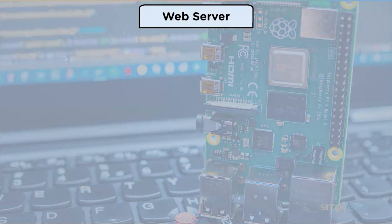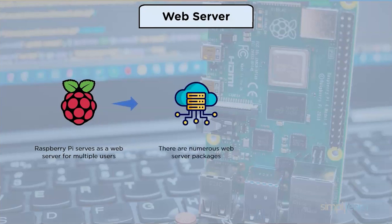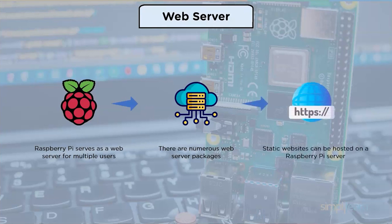The first project is web server. The Raspberry Pi serves as a web server for multiple users. In most circumstances, the Pi's performance is insufficient for reliably hosting large amounts of dynamic online content. Instead, the mini computer is better suited for a local testing environment or simple static websites with low visitor counts.